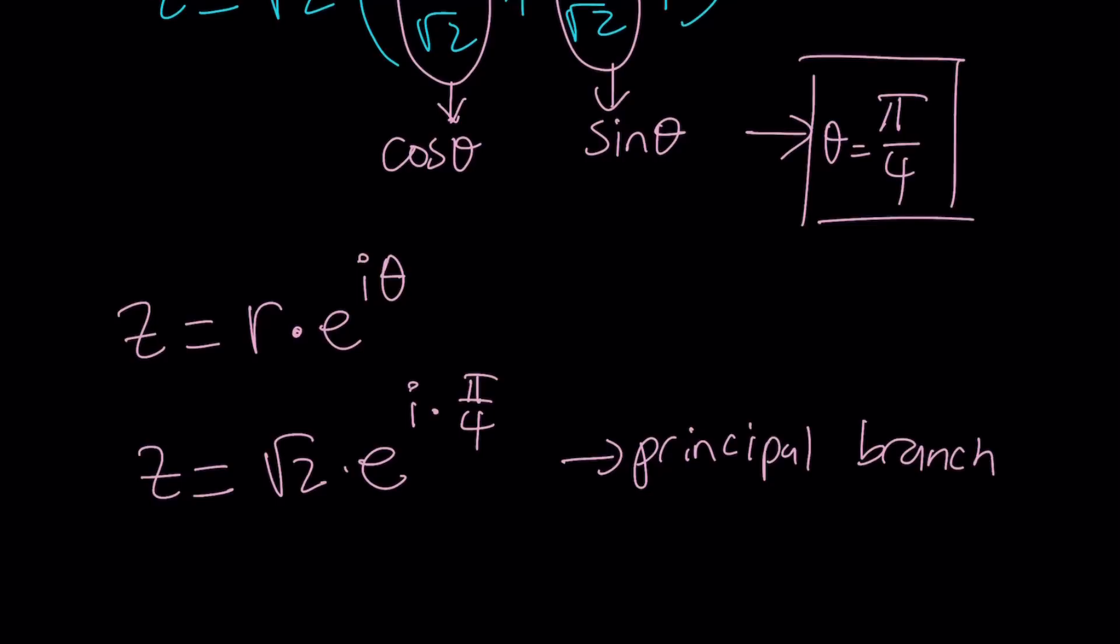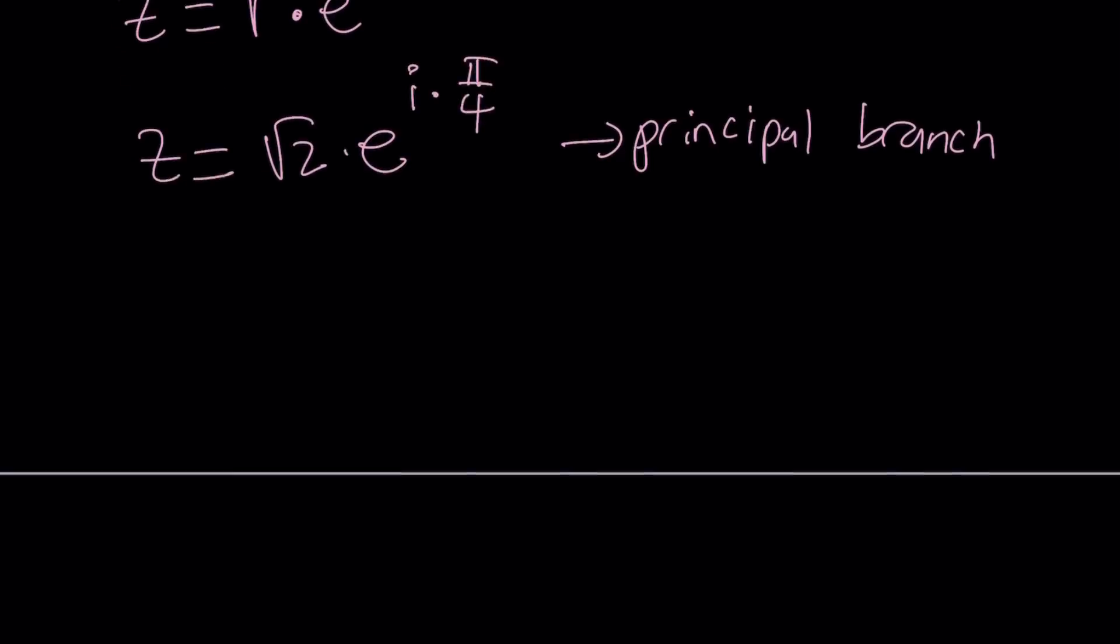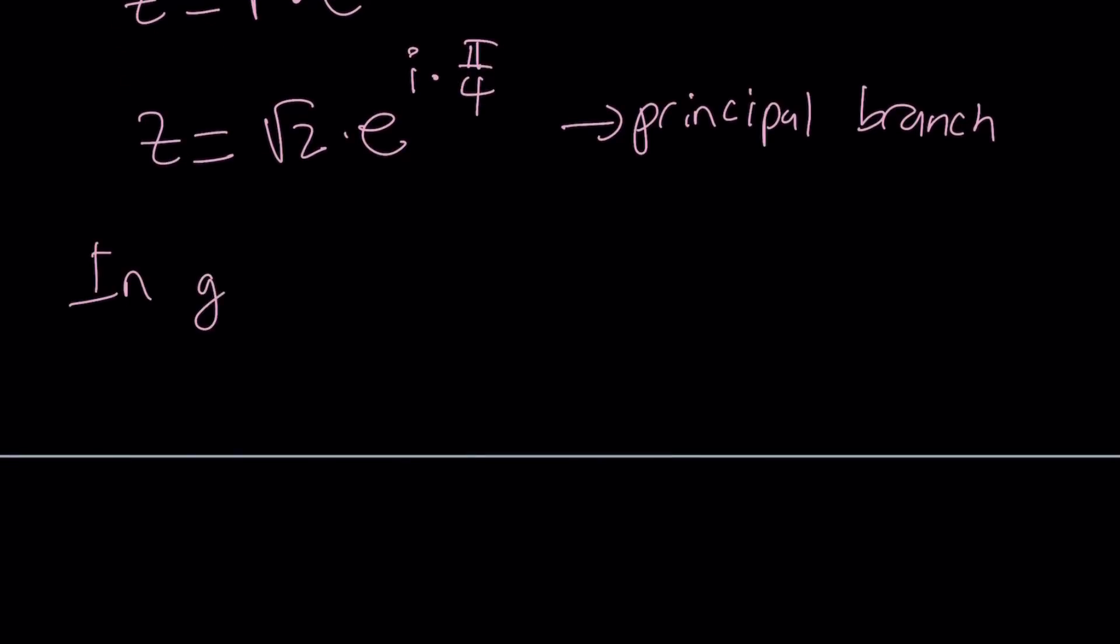How do you write this in general? That's what matters. In general, we can write z as √2 times e^(i(π/4 + 2nπ)). All you have to do is just add multiples of 2π, and you're good to go.